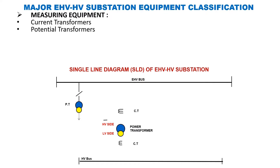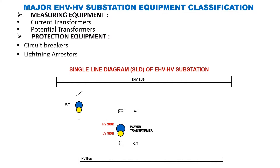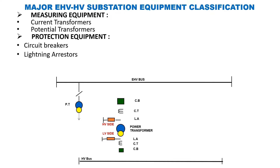Next are the protection equipment such as circuit breaker and lightning arrestors (LA). Lightning arrestors are always placed closest to the power transformer since its protection is of prime importance. Circuit breakers are placed as shown in the single line diagram.